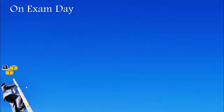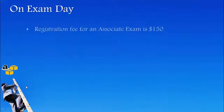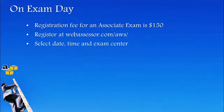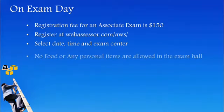We will see what to expect on the exam day and review different types of exam questions. The registration fee for the Associate exam is 150 US dollars. You have to register through the Web Assessor site, select a date and time, and also choose a Criterion examination center nearby you.